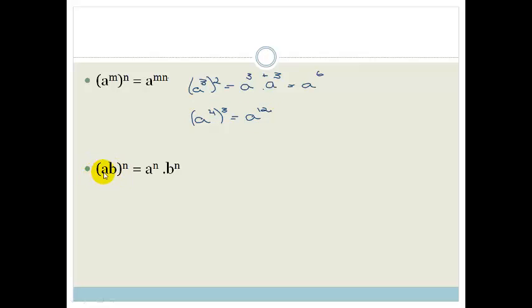And then similarly, if we've got ab, all to the power of n, that can be broken down into a to the n, b to the n. So in other words, if for example, I have got 2 times by 4 cubed,